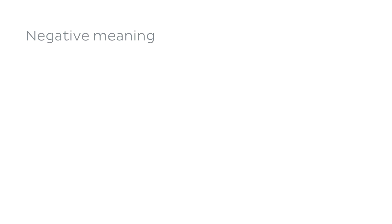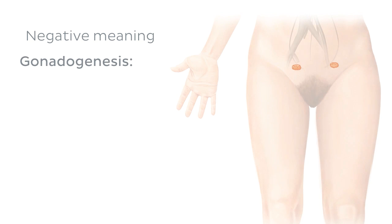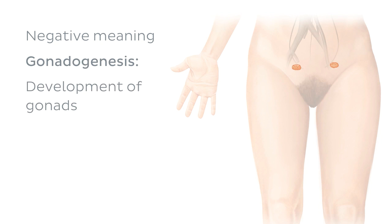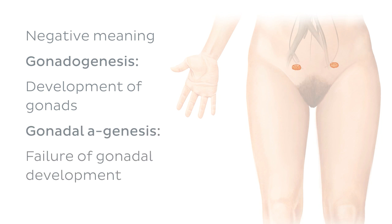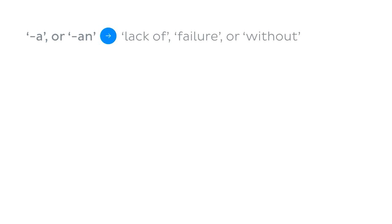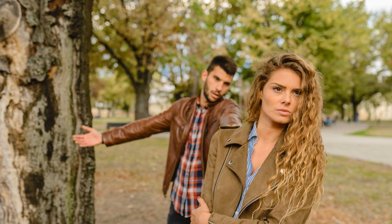Prefixes are also often used to give a negative meaning to an anatomical term. For example, gonadogenesis is the process which leads to the development of gonads or primary reproductive organs, while gonadal agenesis is a condition involving failure of gonadal development. We can add the prefix 'a' or 'an' to suggest lack of, failure, or without — so next time you want to break up with someone, just say sorry, but I'd rather stay alone.